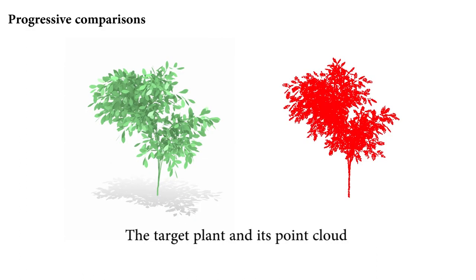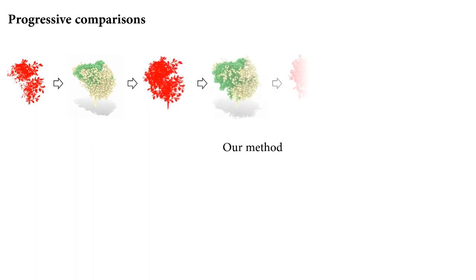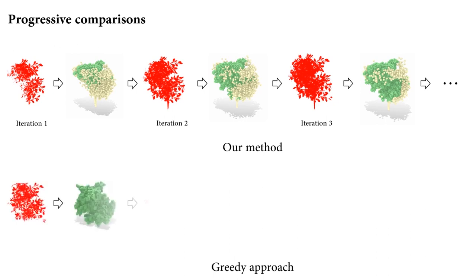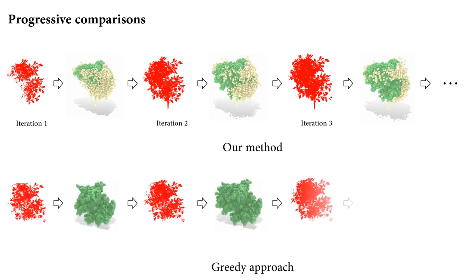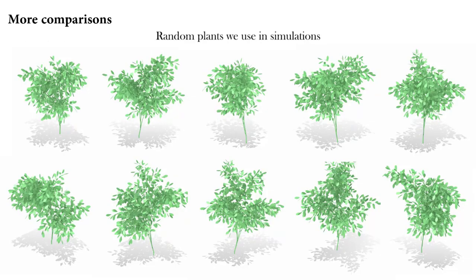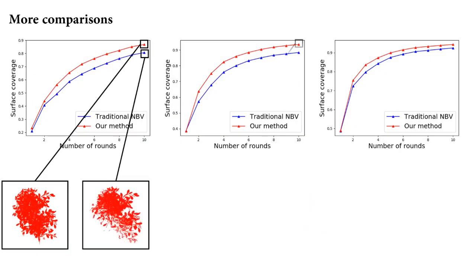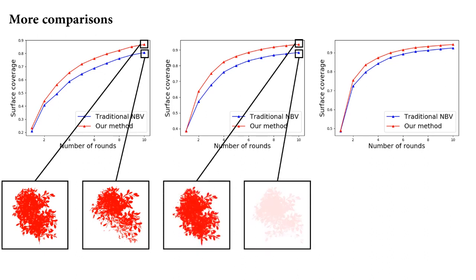From the comparison between our method and the grading method, we can see that our method performs better because of the oracle map. The deep learning network has the priors of the learned structures, while the grading method does not. Here is another comparison in terms of surface coverage.